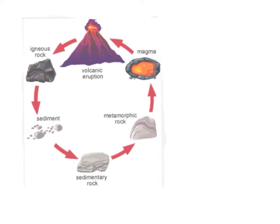This is a rock cycle with Thomas and Gunner. A rock cycle is when a volcanic eruption happens and the lava cools off into an igneous rock.